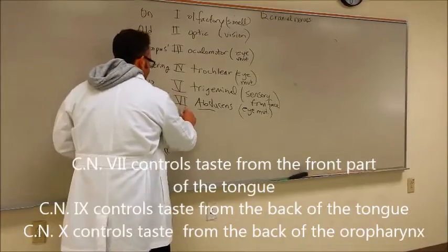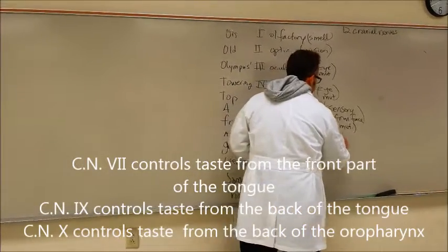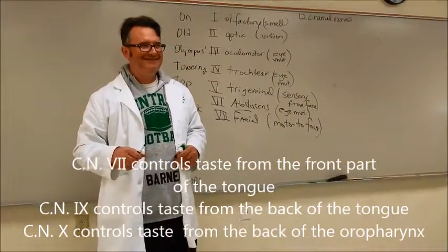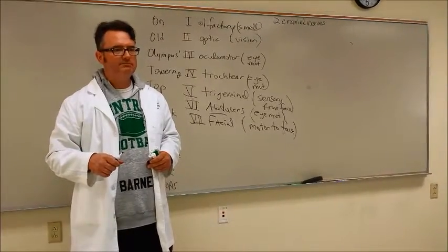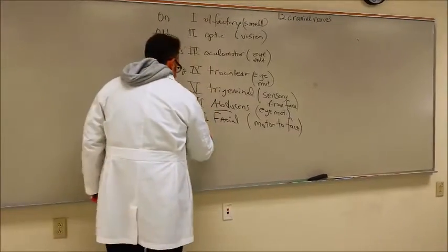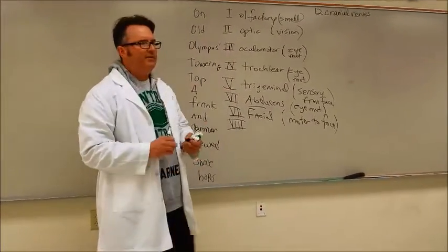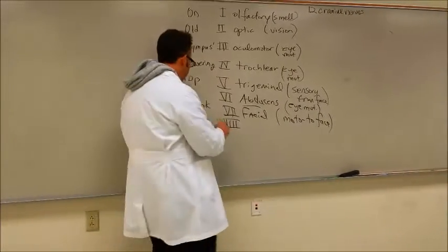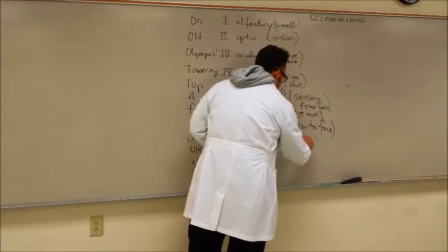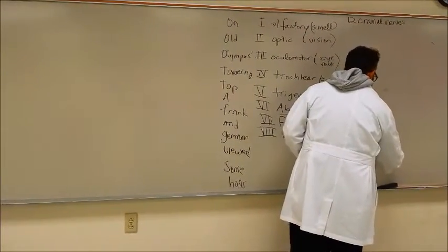Then Frank is seven, which is facial. This is motor to the face. Whenever I smile or move my eyebrows up and down or whatever I'm doing with my face, facial nerve, that's what does that. Eight is a little bit confusing. In the old days they called it the auditory nerve. Now we call it the vestibulocochlear nerve, and that is for balance and hearing.